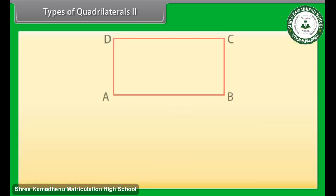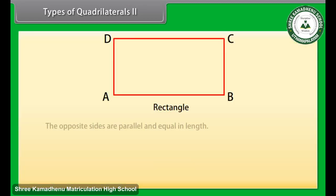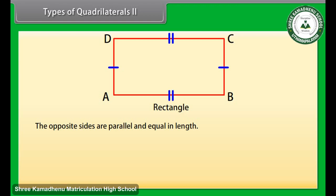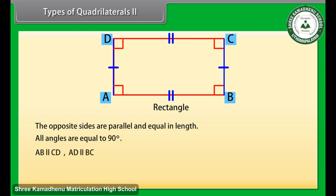Types of quadrilaterals 2. Now come to rectangle. In a rectangle, the opposite sides are parallel and equal in length, and all angles are equal to 90 degrees. Here AB is parallel to CD and AD is parallel to BC, and angles A, B, C, and D are all 90 degrees. So ABCD is a rectangle.